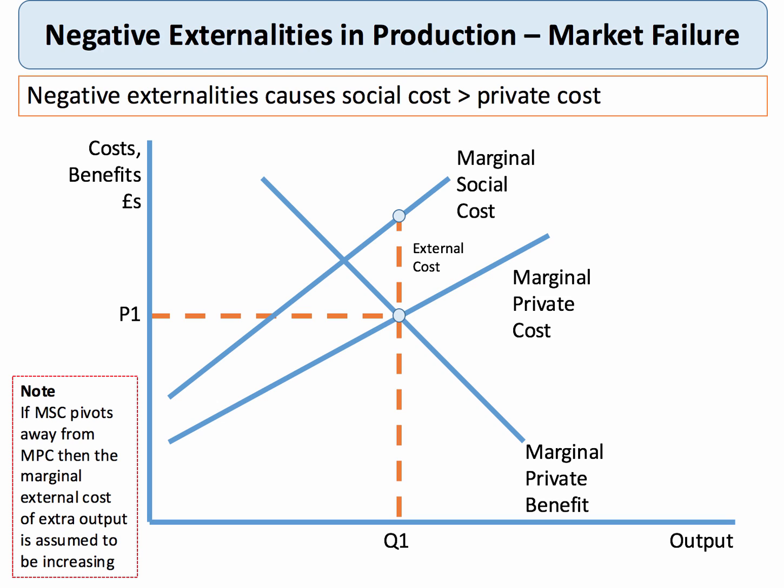If the market does not take into account the externalities, this can lead to market failure. Ideally, what we'd like is to have a different output, Q2, which is less than Q1. So, in the absence of intervention, the free market will tend to over-provide or over-consume goods and services where there are negative externalities.